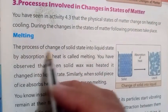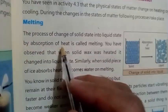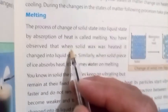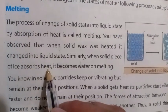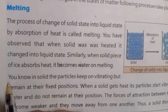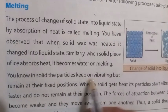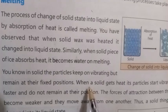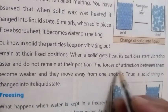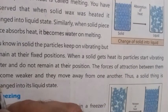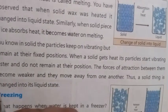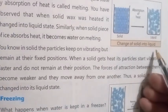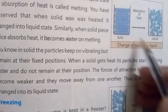Melting: the process of change of a solid state into a liquid state by absorption of heat is called melting. When solid wax is heated, it changes into liquid. Similarly, when a solid piece of ice absorbs heat, it becomes water. In a solid, particles keep vibrating but remain at fixed positions. When a solid gets heat, its particles start vibrating faster and do not remain at their position. The forces of attraction between them become weaker and they move apart, thus changing the solid into its liquid state. Change of solid into liquid: solid + absorption of heat → liquid.